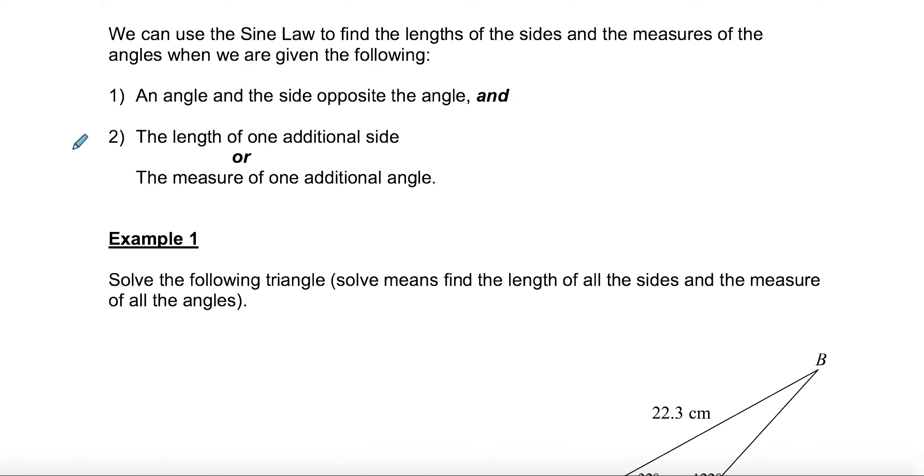We can use the sine law to find the lengths of sides and the measures of angles when given the following. Here's the key thing: you need an angle and an opposite side, an angle and its corresponding side. Sometimes I just say you need a partner, an angle and the side across from it. Then as long as you have one other side or one other angle, you'll be able to find the unknown side or angle.